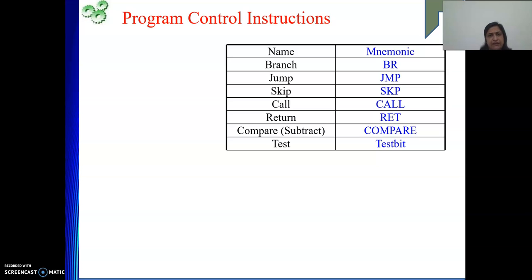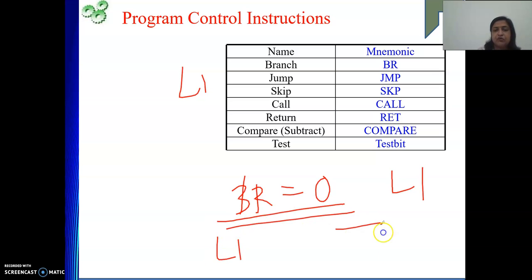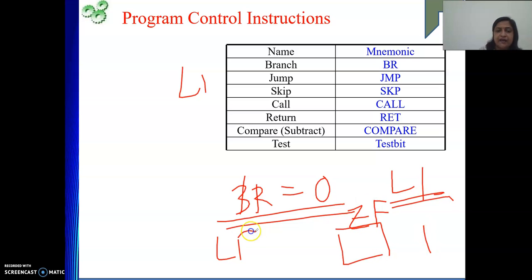If the flag value is 1 we take the branch; if it is 0 we will not take the branch. For example, branch-equal-to-zero L1 means we look at the zero flag. If zero flag equals 1, we go to L1; else we execute the next instruction. We have already seen how the PC value is changed in this context.